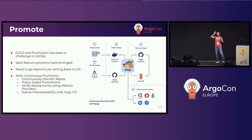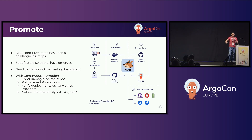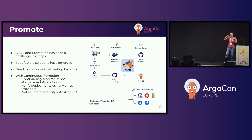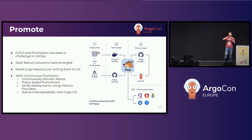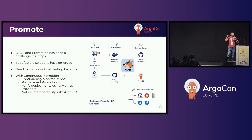Next is promotion. You're going to hear a lot about GitOps promotion here — there are a few talks on it. What Michael Crenshaw was talking about is that promotions are a challenge; they continue to be a challenge in GitOps. While many spot solutions have emerged, the Acuity team attacked the problem holistically. We took a giant step back and realized it's much more than just writing back to Git — there's a whole process, including analysis, that comes into play in order to do promotions.